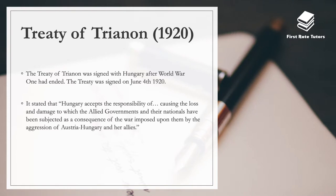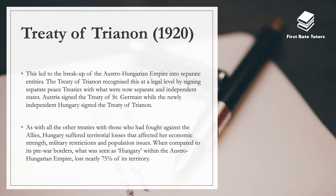The Treaty of Trianon in 1920 was signed with Hungary after World War One ended. It stated that Hungary accepts responsibility for causing loss and damage to which the Allied governments and their nationals were subjected as a consequence of the war imposed by the aggression of Austro-Hungary and her allies. This treaty recognized the breakup of the Austro-Hungarian Empire at a legal level, with Austria signing the Treaty of Saint-Germain and the newly independent Hungary signing the Treaty of Trianon. Hungary suffered territorial losses that affected its economic strength, military capacity, and population — losing nearly 75% of its pre-war territory.